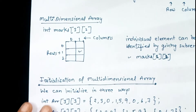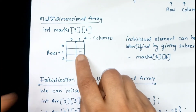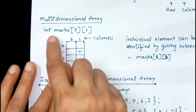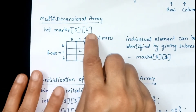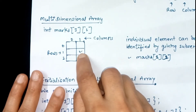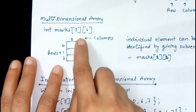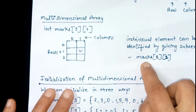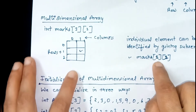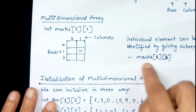If we want to identify an individual element of the array, we give the name of the array followed by the subscript — the row and column. For example, to indicate a specific element, we give the address as the array name with the row and column in which it lies. For example, marks[1][1] means first row and first column.